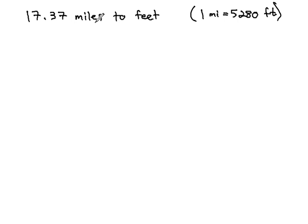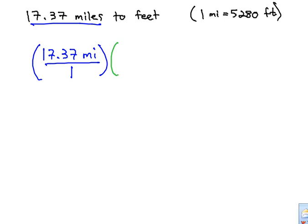First, we make the 17.37 miles into a fraction by putting it over 1. We will then multiply this fraction by what is called a unit conversion. Our unit conversion factor is going to attempt to clear out the units we don't want, miles.